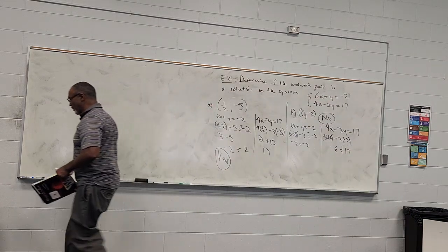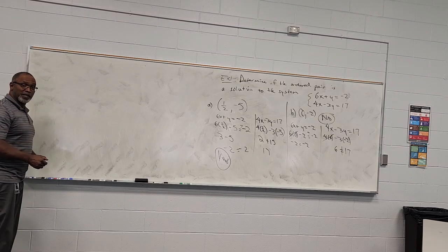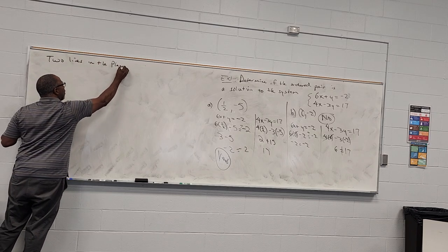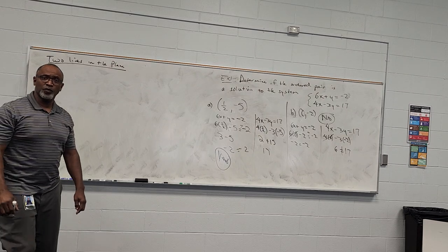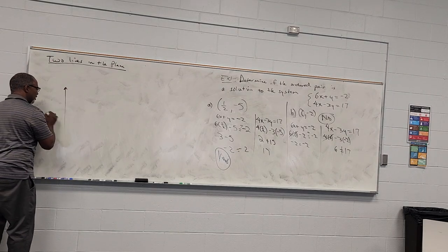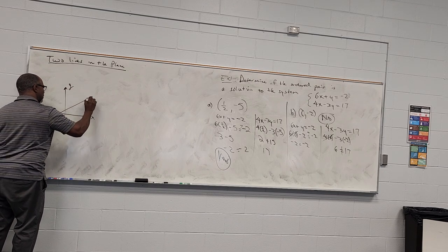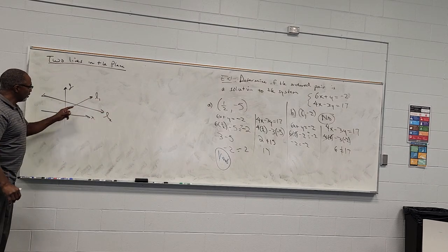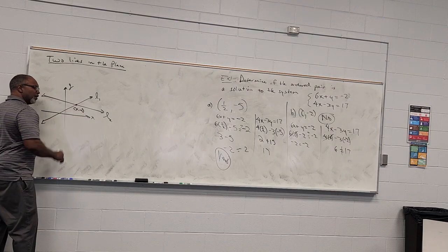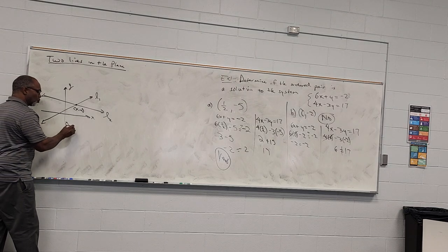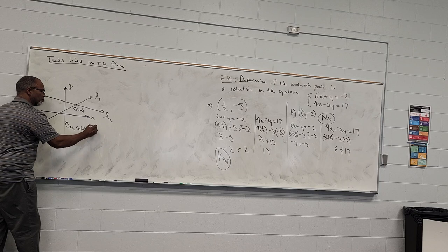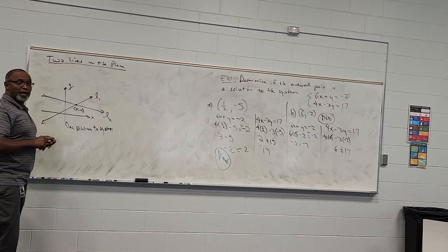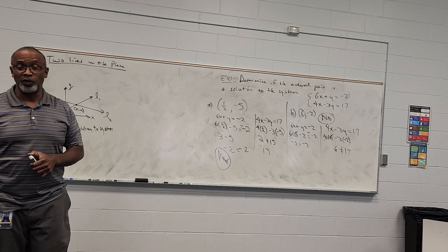Let's think about this. We know a lot about straight lines. We have two lines in the plane, and we want to look at the possibilities. Suppose one line L1 goes in one direction, and another line L2 goes in a different direction. Those two lines cross at some point x comma y. Any time two lines cross at a point, that means there is one solution to the system.